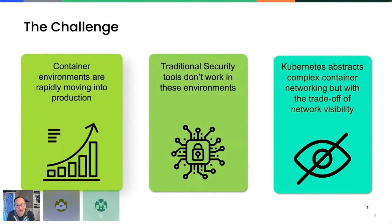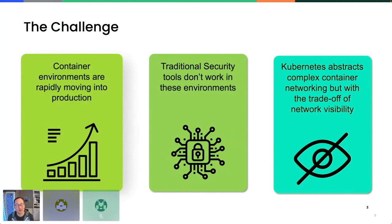The big picture context is: everyone's getting ready to push containers into production. Before you do that, we need to make sure these containers and all the open source components being used — including SUSE products — are going through a secure supply chain process so that back doors or other tainted images can't be introduced into the pipeline. We need container-specific and cloud native tools because traditional tools don't work in a containerized environment, whether in the pipeline for image scanning or during runtime when you're running your Kubernetes workloads.